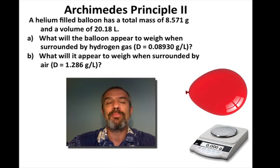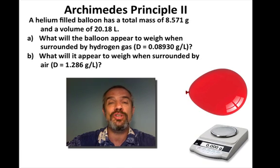Part B, what would it appear to weigh when surrounded by air? And the density of air is 1.286, again, grams per liter.